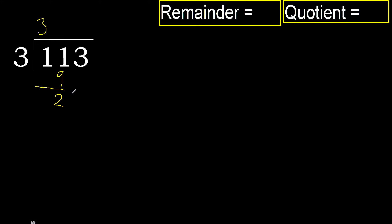Next digit: 23. 3 multiplied by 8 is greater. Multiply by 7: 21 is not greater, ok. 23 minus 21 equals 2.